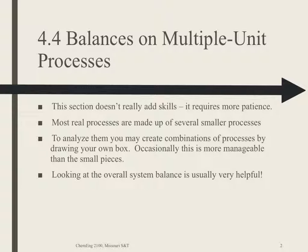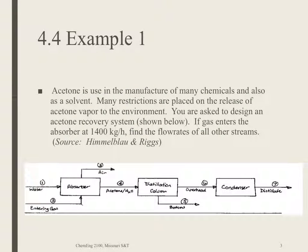Usually an overall system balance will be incredibly helpful. So we're going to look at one example in this video. In this particular one, acetone is used in the manufacture of many chemicals and it's also used as a solvent. But a lot of restrictions are placed on release of acetone vapor to the environment. So we are working to design an acetone recovery system. The diagram is shown below and the requirements on compositions are in a table that I'll show you next. The gas is going to enter the absorber at 1400 kilograms per hour and we want to find the flow rates of all the other streams.